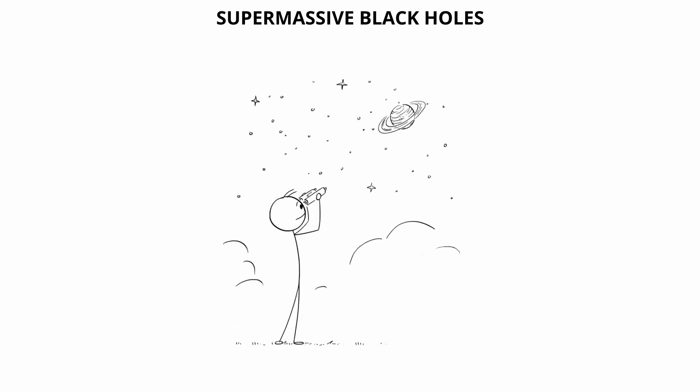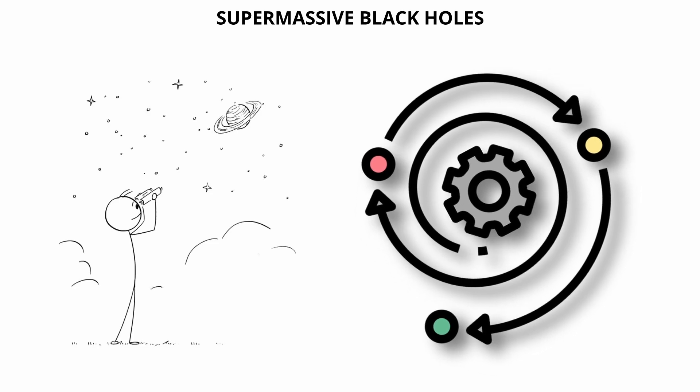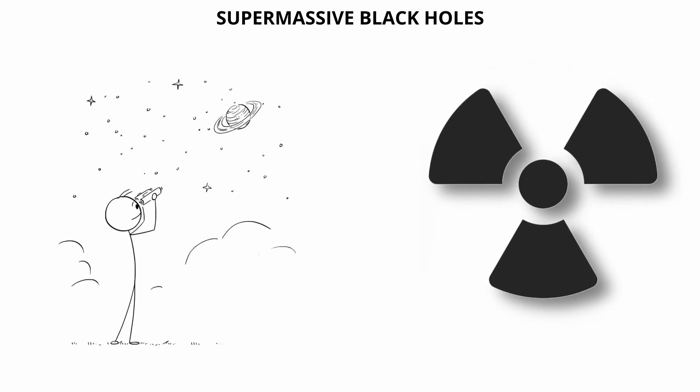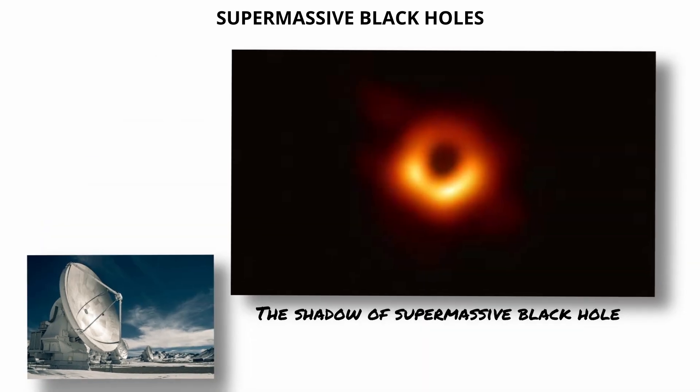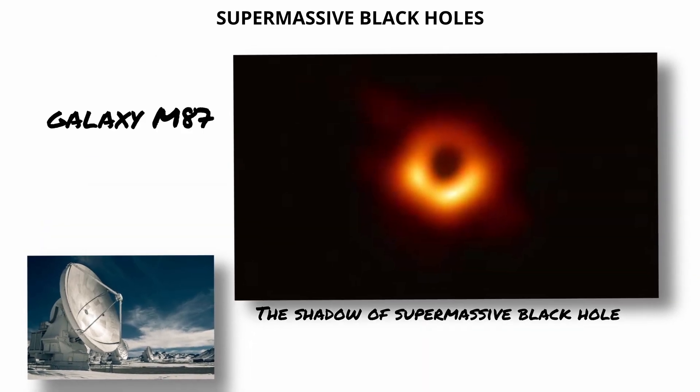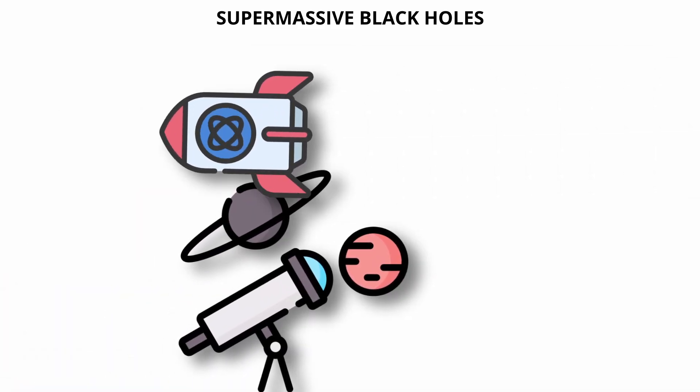Although invisible themselves, supermassive black holes can be detected by observing their gravitational effects on nearby stars and gas, or by the energetic emissions from their accretion disks. The Event Horizon Telescope famously imaged the shadow of a supermassive black hole in the galaxy M87 in 2019, marking a major breakthrough in astrophysics.